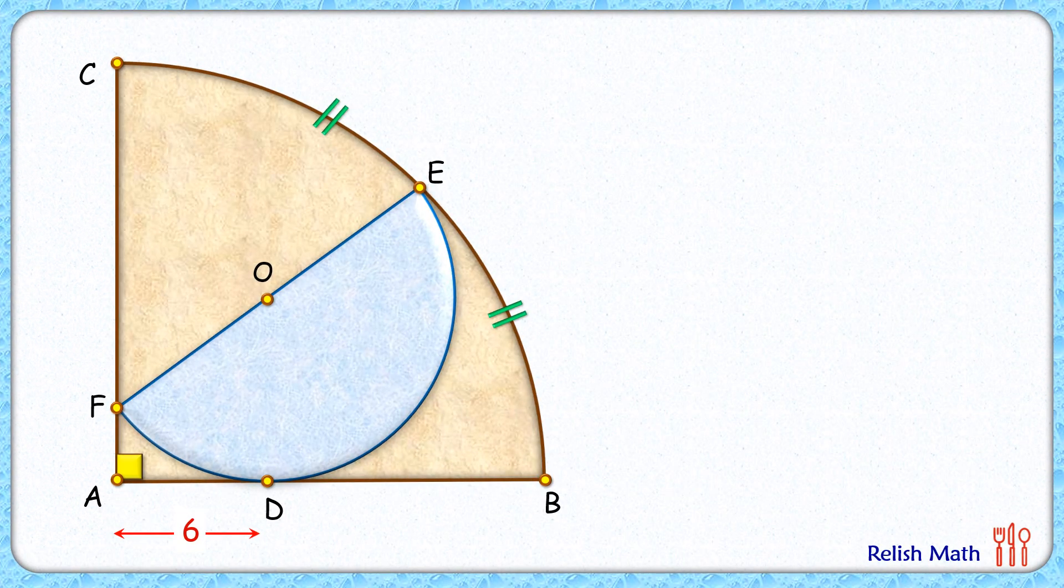Let's check the solution. Let's start by assuming the radius of this semicircle as r centimeters. Now let's join OD. OD is radius and EB is tangent, thus this angle D is 90 degrees.